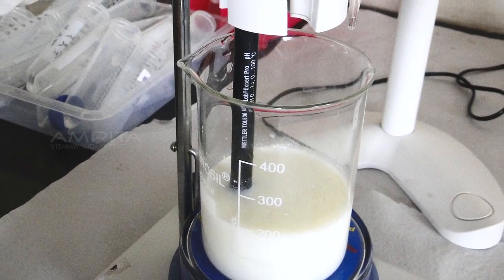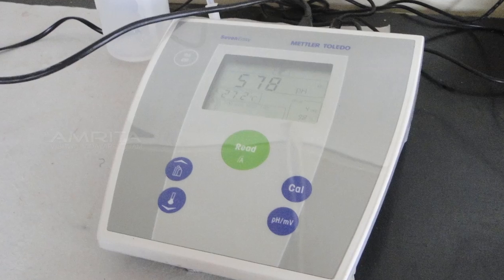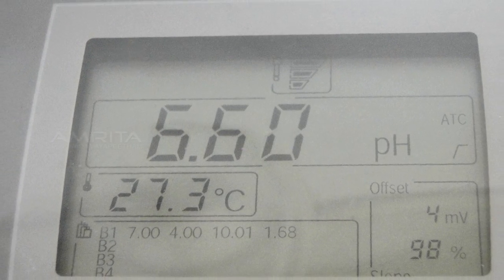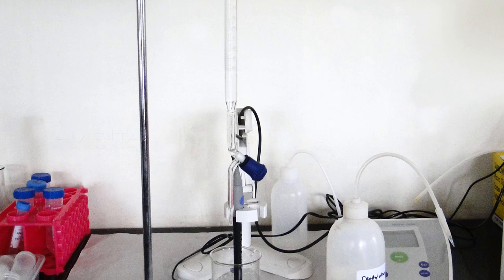Dip the electrode into the beaker containing milk and check the pH. The pH should be approximately 6.6. Now arrange the apparatus as shown.